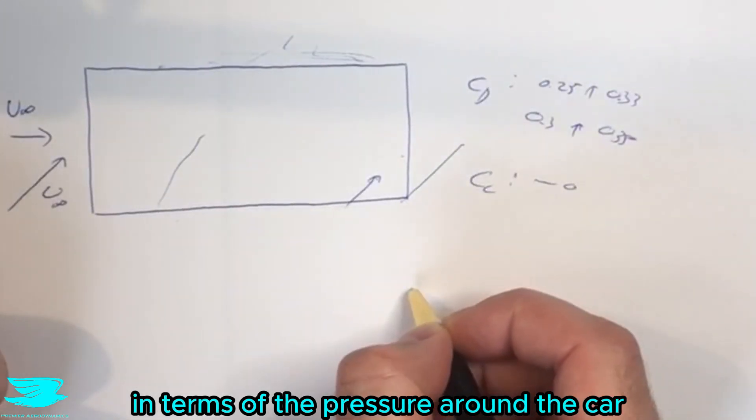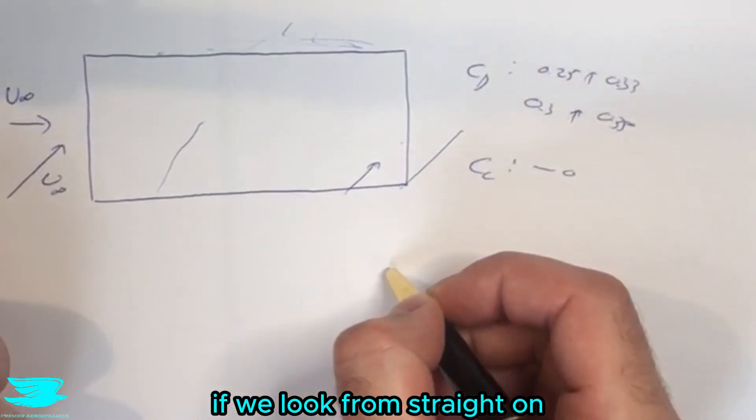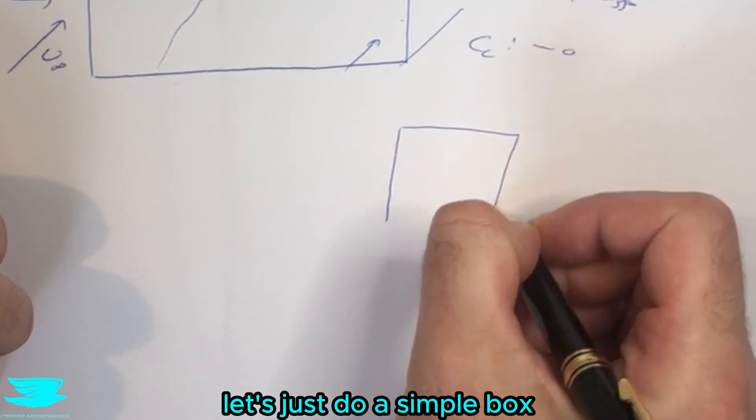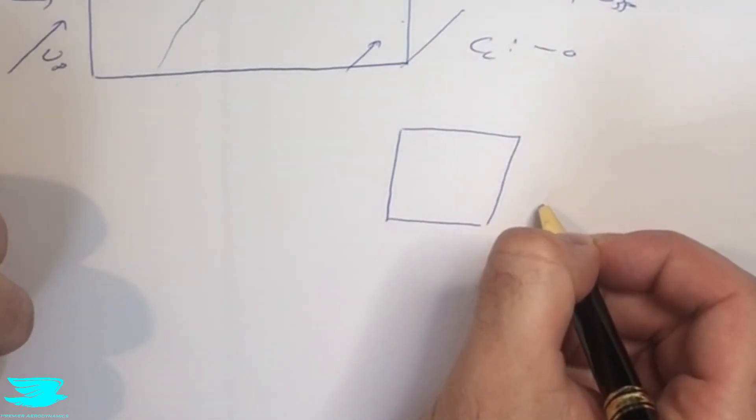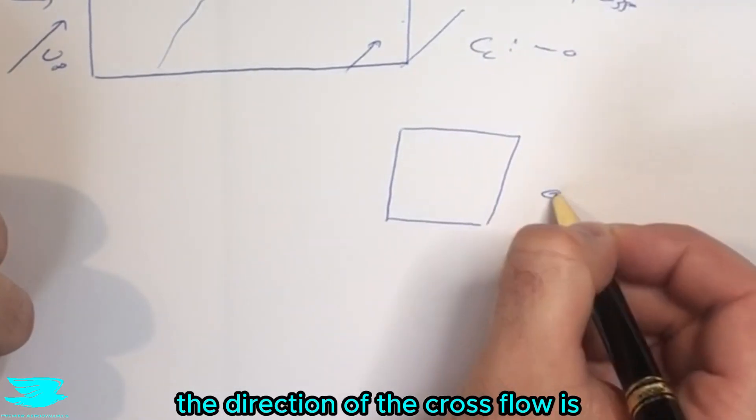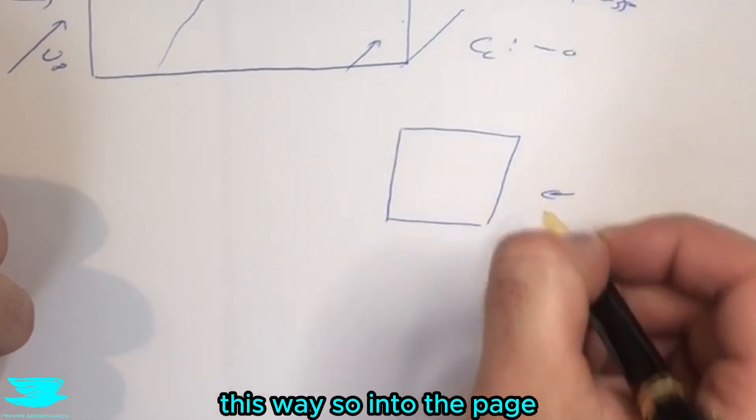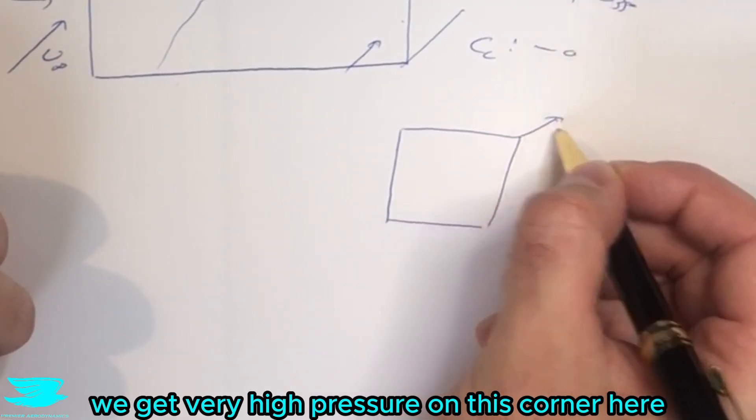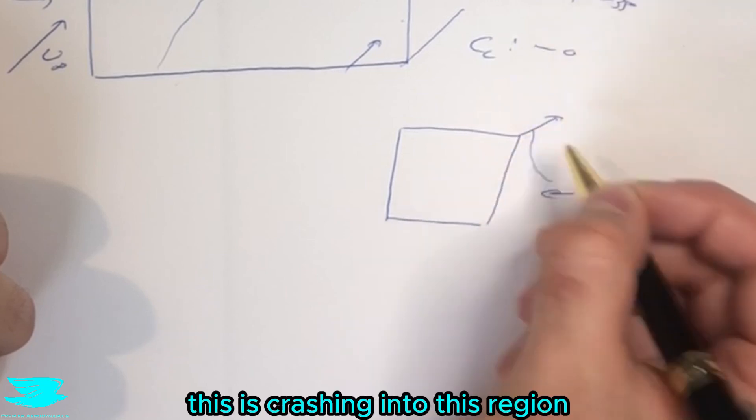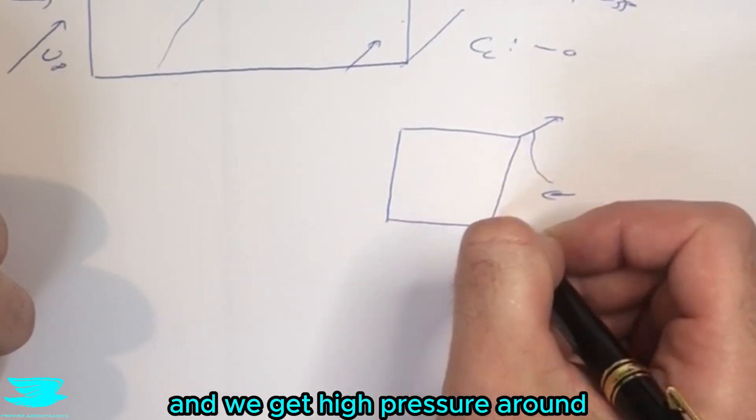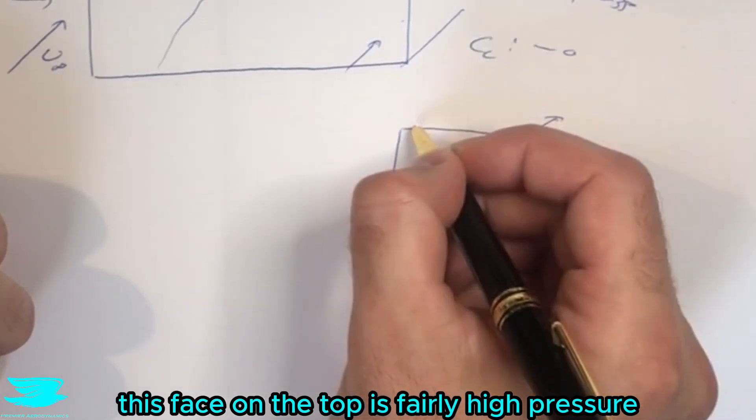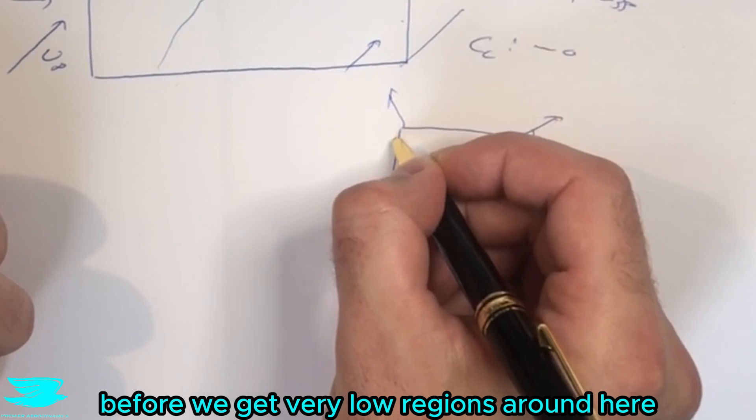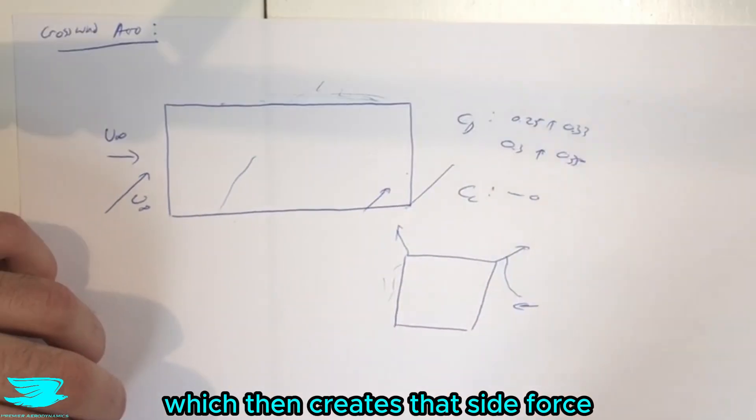In terms of the pressure around the car, if we look from straight on, let's just do a simple box and the wind in the direction of the side, the cross flow is this way, so into the page this way. We get very high pressure on this corner here and that's because as the flow comes along it is crashing into this region and we get high pressure around this face. On the top there's fairly high pressure but then we get another peak around here before we get very low regions around here which then creates that side force.